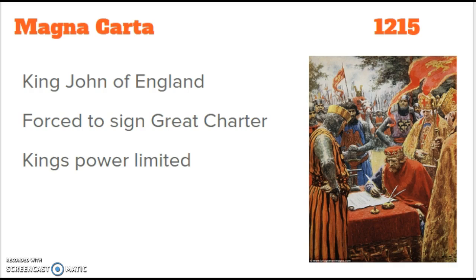Fast-forwarding to around the 1200s — England at the time had a king named King John. King John wasn't necessarily the best leader; he was putting England in costly wars with different European countries, for example France. To fight a war takes a lot of money — you have to pay soldiers, buy supplies, ammunition, and weapons. So the question is: where does the king get the money for these expensive wars? The answer is from the people, and King John started raising a series of taxes.